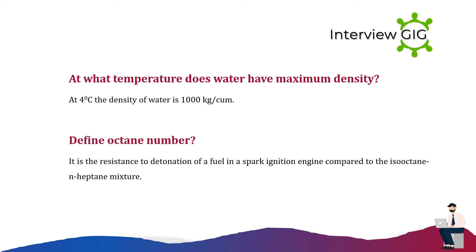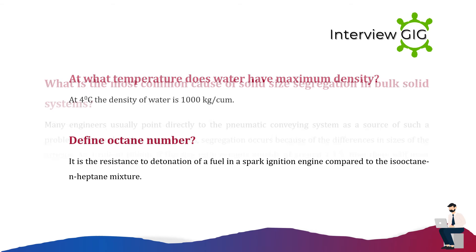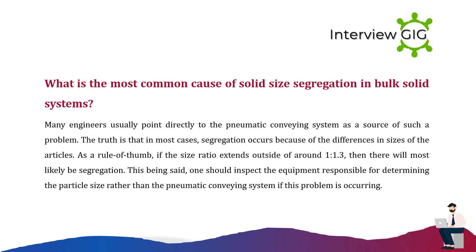At what temperature does water have maximum density? At 4°C the density of water is 1000 kg/m³. Define octane number: it is the resistance to detonation of a fuel in a spark ignition engine compared to an isooctane and heptane mixture.